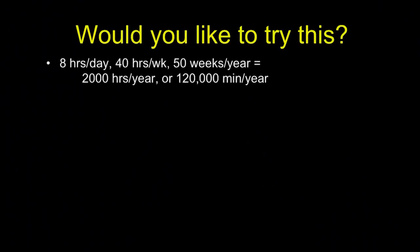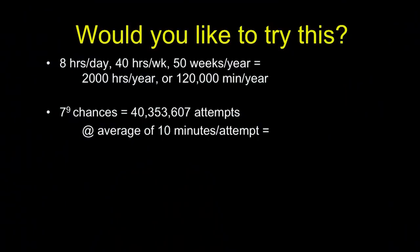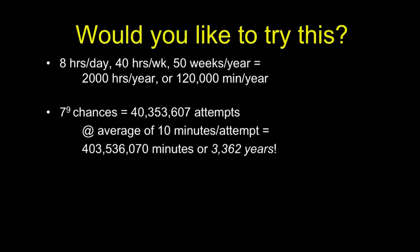The more rules you add, the more restrictive it becomes. Would you like to try this? Assume you worked eight hours a day, 40 hours a week, for 50 weeks a year — about 2,000 productive hours per year, or 120,000 minutes. You've got seven to nine chances to try this randomly among 40 million attempts. Let's assume it takes you 10 minutes to do a draft, and if it doesn't work, another 10 minutes to try another draft. In that case, it would take you about 3,362 years to come up with that design.